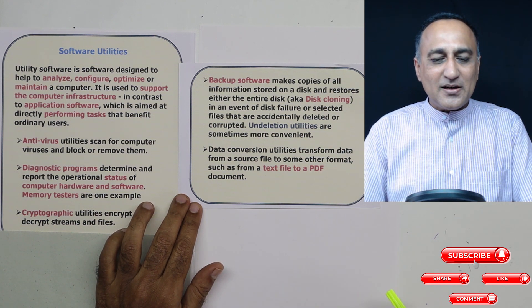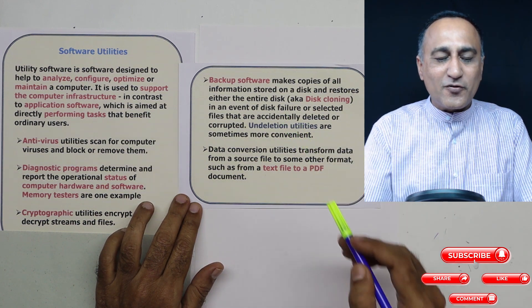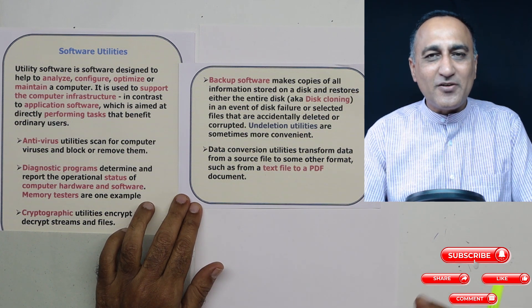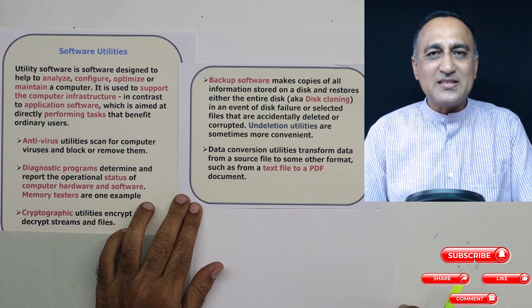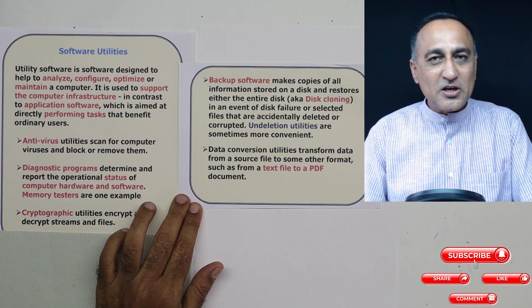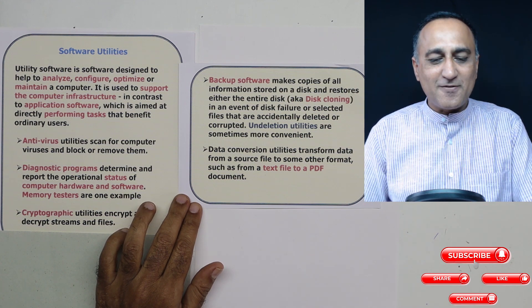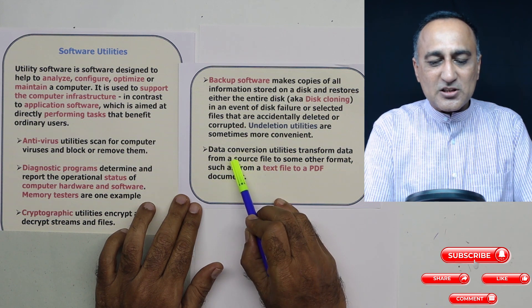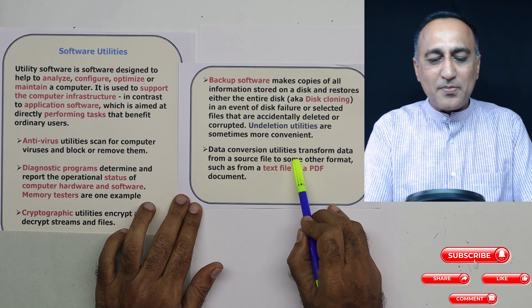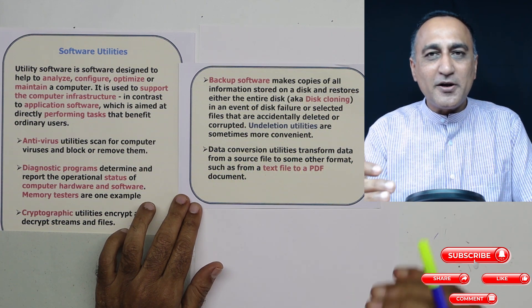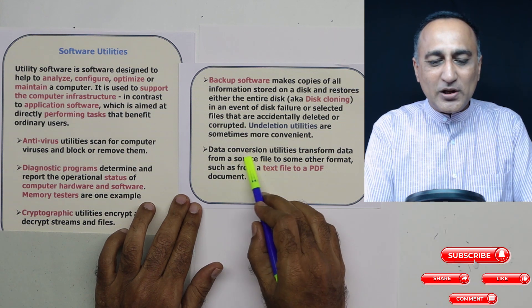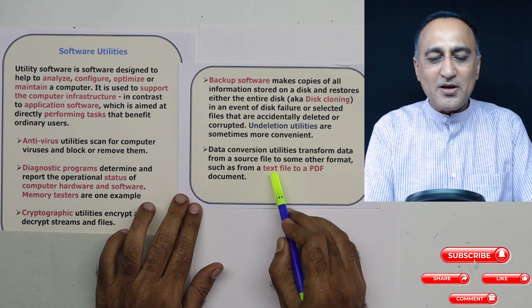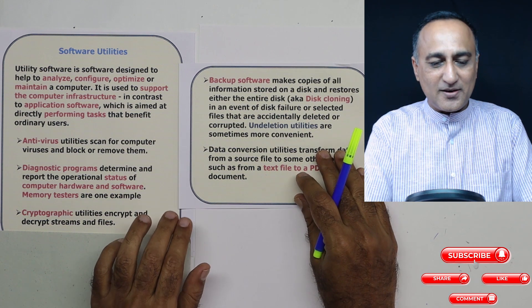Another example of utility software: suppose you have accidentally deleted some files or some files get damaged on your hard disk — there are software programs which help you recover those damaged files. Also, suppose on the web you want to transform a Word document into PDF or a PDF to Word — you get utilities which will help you transform from one format to the other.